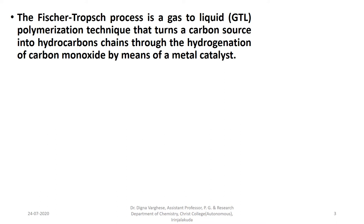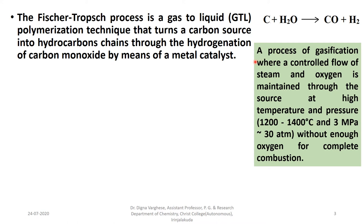The Fischer-Tropsch process is a gas-to-liquid polymerization technique that turns a carbon source into hydrocarbon chains through the hydrogenation of carbon monoxide by means of a metal catalyst. In this, the carbon source is treated with steam, forming carbon monoxide and hydrogen, i.e. synthesis gas — a process of gasification, where a controlled flow of steam and oxygen is maintained through the source at high temperatures and pressures without enough oxygen for complete combustion.